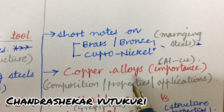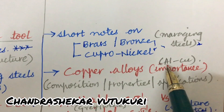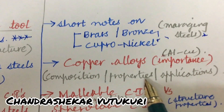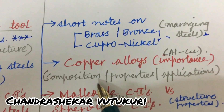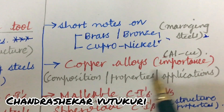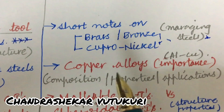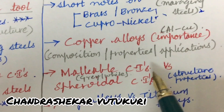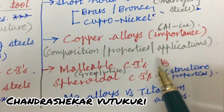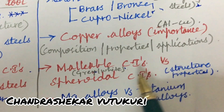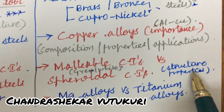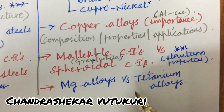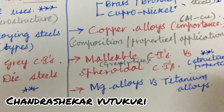List out the copper alloys and their importance, along with aluminum-copper composition, properties, and applications. I am stressing all things related to properties, applications, and compositions of various materials in metallurgy. Malleable cast iron versus gray and white cast iron, as well as nodular cast irons and their structure and properties, are very very important. Also, magnesium alloys versus titanium alloys and their differences.